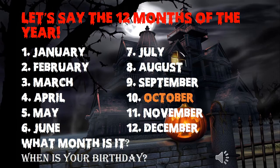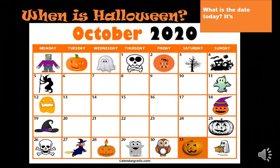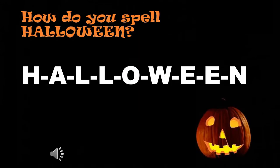Slide 8: ask when is Halloween — they should answer 'it's on October 31st,' or allow them to say 'it's October 31st.' Also ask 'what is the date today?' — they should say 'it's Monday October 12th,' for example.